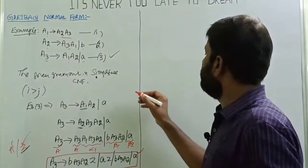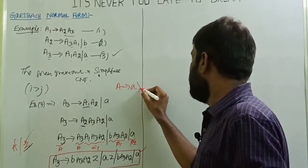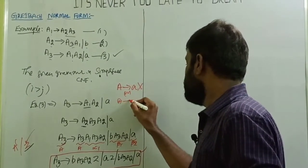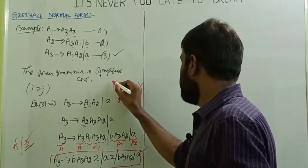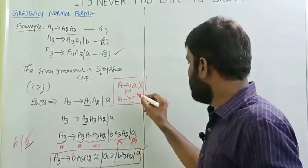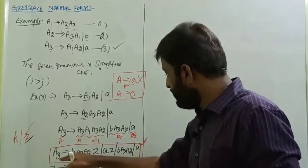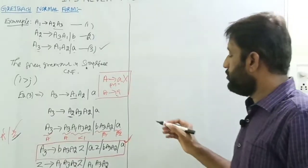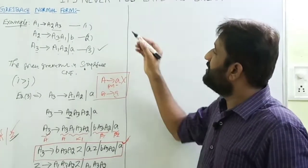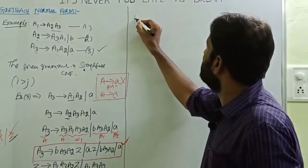The Greibach Normal Form requires productions of the form A tends to a X (terminal followed by any number of non-terminals) or A tends to a (exactly a single terminal only). A3 is now converted into Greibach Normal Form. Now substitute A3 productions into the A2 production.